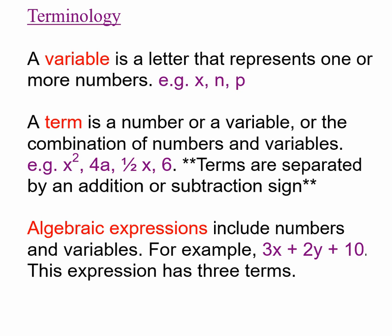When we put them together in what's called an algebraic expression, that's just a combination of numbers and variables put together with signs between them. Terms are simply separated by addition or subtraction signs. So in this expression, 3x + 2y + 10, this has three terms: 3x is one term, 2y is one term, and 10 is another term. Terms can be a combination of just letters, just numbers, or numbers and letters together.